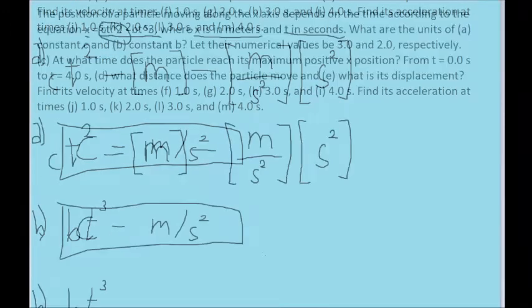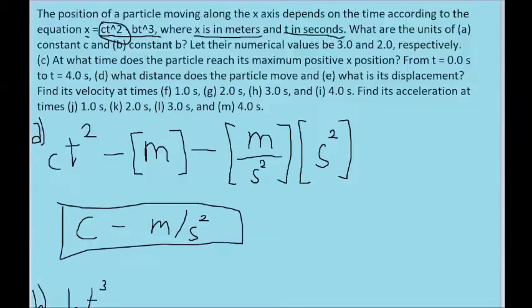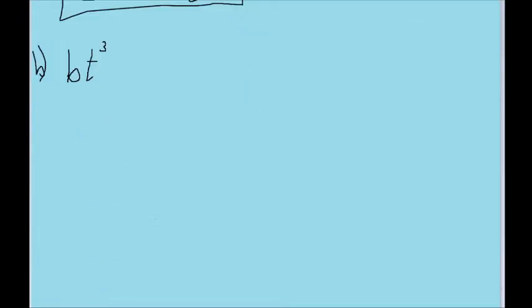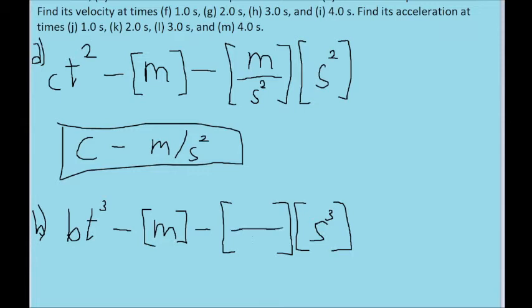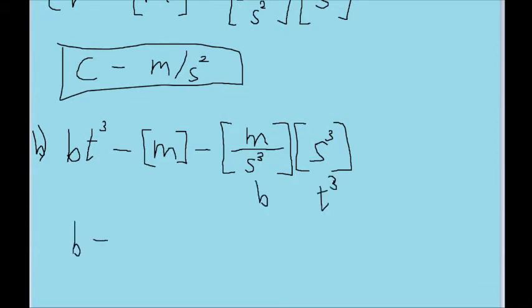We'll use the same logic for part b. We're asked about the units of constant b, and in the equation we're given, we have a term that says bt cubed. We know that this full term must have units of meters, and that the t, since it has units of seconds, will be multiplying whatever the unit of b is times t to the power of 3, or seconds cubed. Now these seconds cubed are not in the meter term that we're trying to equate this to, so I'll put seconds cubed in the denominator. Following the same logic as above, I'll also put a meter term in the numerator. It appears as though the units of b are meters per second cubed.